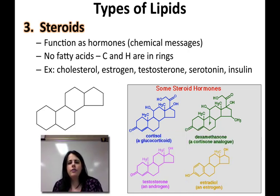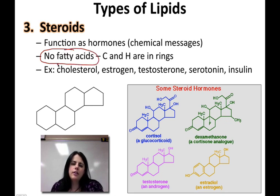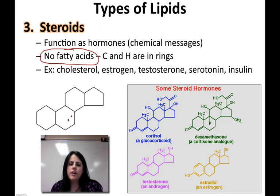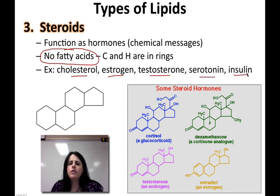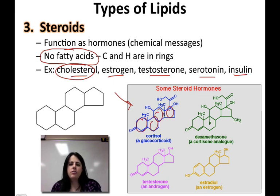The last two types are steroids and waxes. Steroids function as hormones — they are chemical messengers. They don't contain any fatty acids, so they're unusual because almost all fats have fatty acids. Instead, they make ring structures — four ring structures of carbons and hydrogens. We have cholesterol, estrogen, testosterone, serotonin, insulin, dopamine, oxytocin, thyroid hormone, growth hormone — tons of hormones in your body that regulate everything. But the basis for all hormones is cholesterol. They all have this four-ring structure that makes them a lipid, and they're hydrophobic.